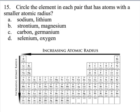This question is looking for the element out of the pair that has the smallest atomic radius. Looking at the first two, sodium and lithium. Lithium is going to be smaller. Why? It only has two energy levels, 1s2, 2s1. Whereas sodium has three, 1s2, 2s2, 2p6, 3s1. That third energy level makes it larger.